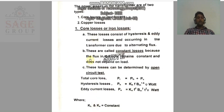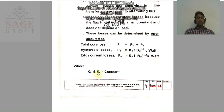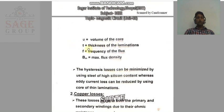The formula for eddy current loss is denoted as Pe. Pe equals KE times F squared times BM squared times T squared times V, where KE is a constant, V is the volume of the core, T is the thickness of the lamination, F is the frequency of the flux, and BM is the maximum flux density.